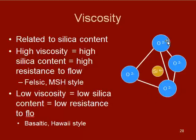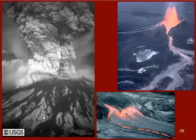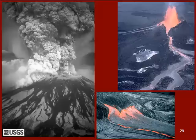The more silicon-oxygen tetrahedra that are present, the more small attractions there are within that magma, and the more resistant it is to moving from place to place. So here we have a high viscosity eruption that is explosive, and then a low viscosity eruption that is very effusive and oozy.